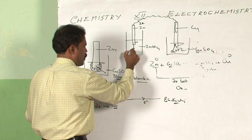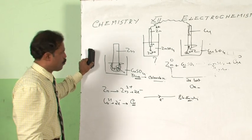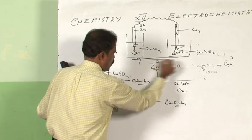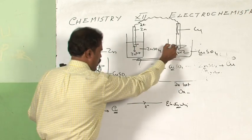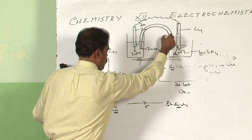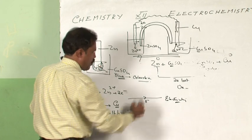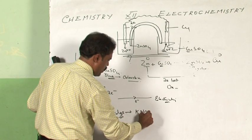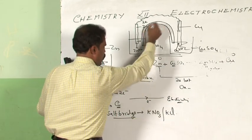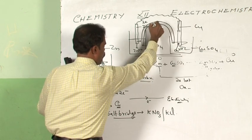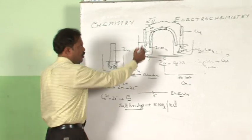From the zinc rod, zinc comes to solution as Zn²⁺ ions, and from the solution Cu²⁺ accepts electrons from the rod and deposits as copper. A particular issue with this arrangement is that the circuit is not complete. So we need to complete the circuit for this cell to work. The method of completing the circuit is by connecting the two solutions by means of what is called a salt bridge — which is nothing but a solution of some electrolyte like potassium nitrate or potassium chloride.